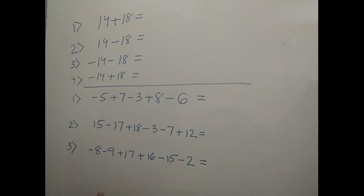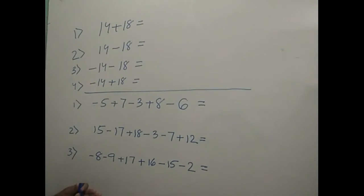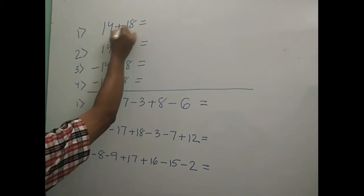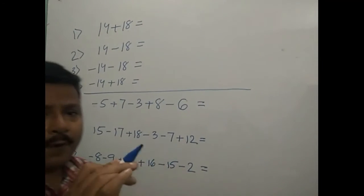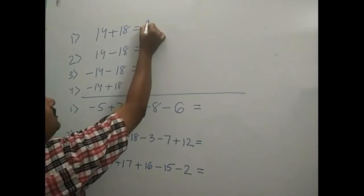Now let us see, there are two positive numbers. 14 plus 18. Both are positive, that means you got to add both of them. 18 plus 14 is equal to 32.